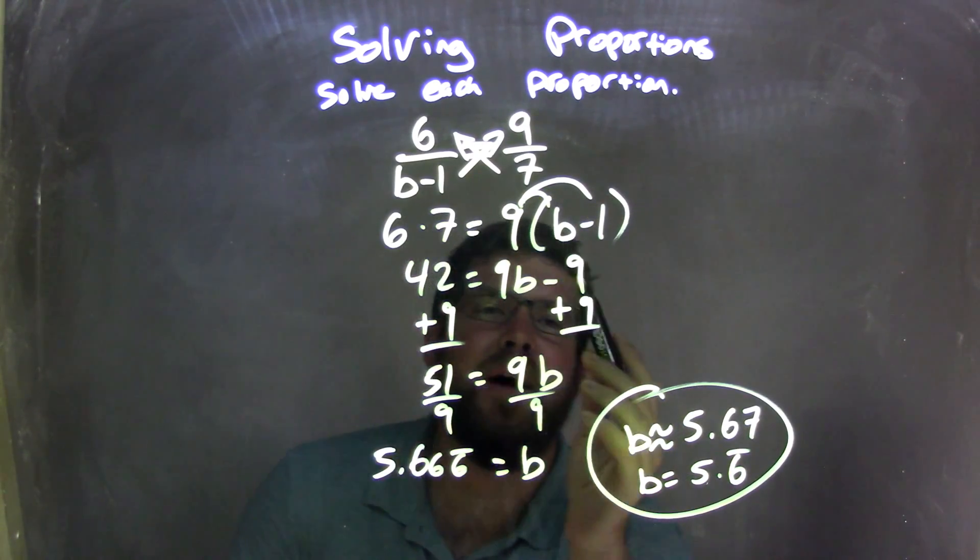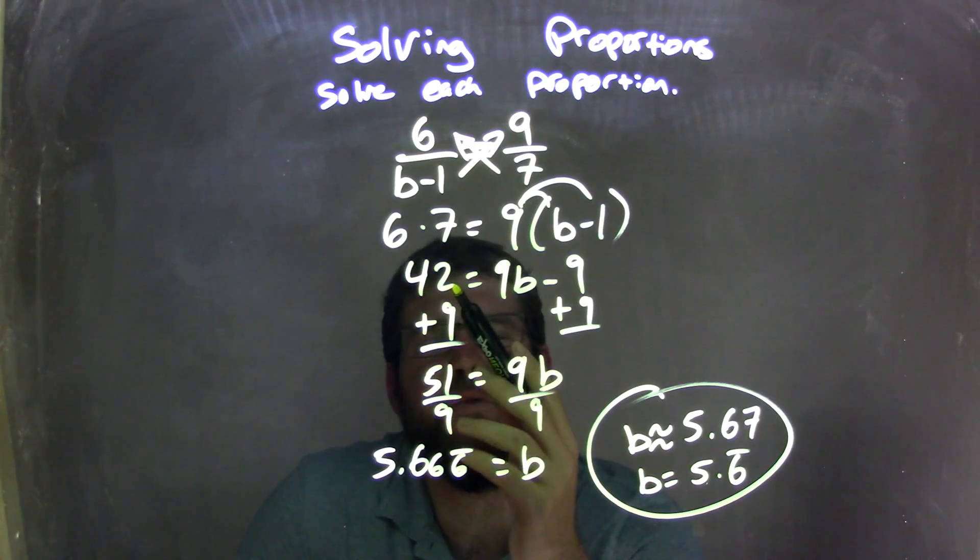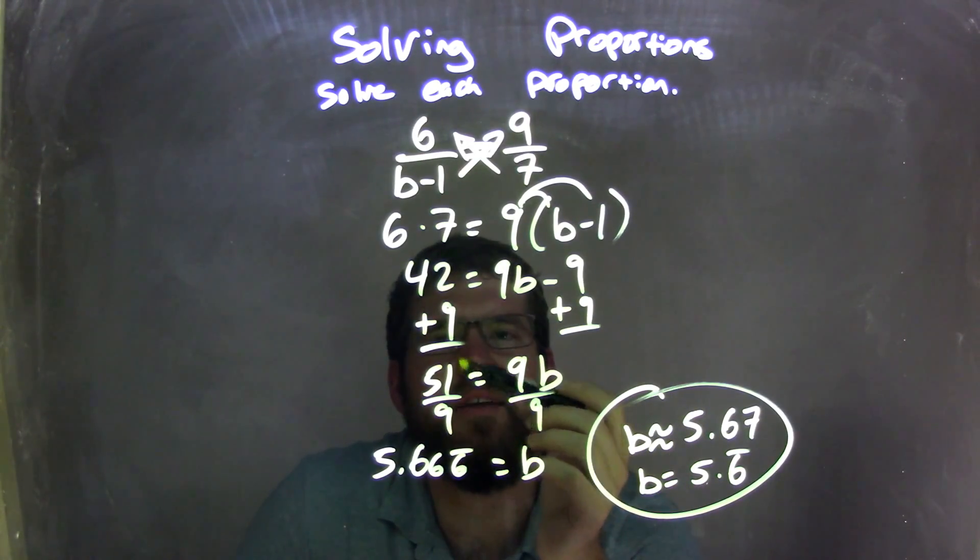I distributed the 9, got 9b minus 9. And 6 times 7 is 42. I added 9 to both sides, giving me 42 plus 9 is 51 equals 9b.